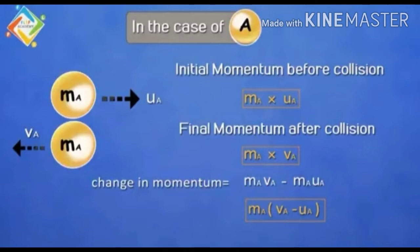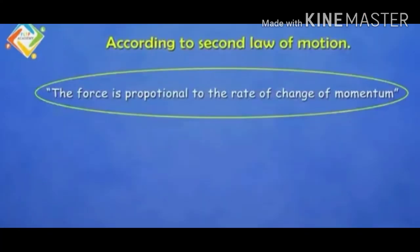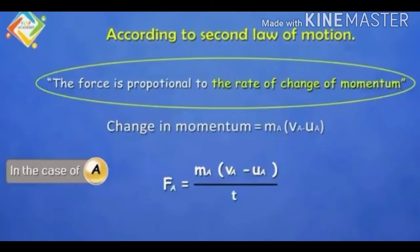Relating this to Newton's second law of motion — force is directly proportional to the rate of change of momentum — we can write force FA in terms of momentum as: FA = MA(VA − UA) / T, where T is the time taken.